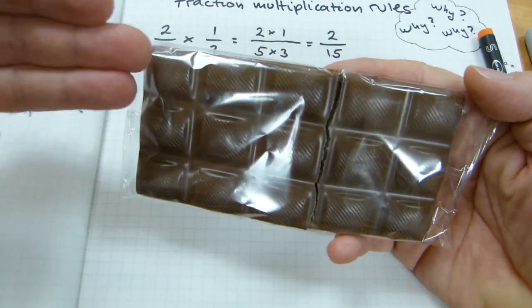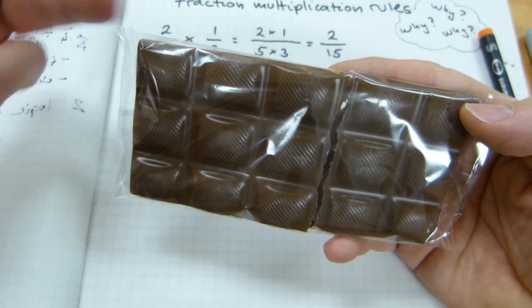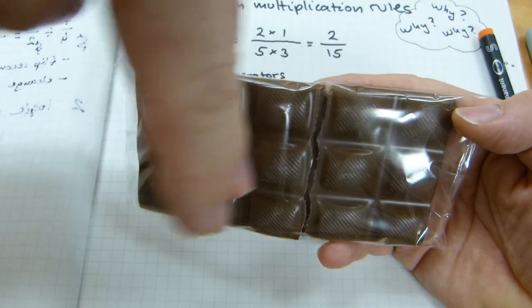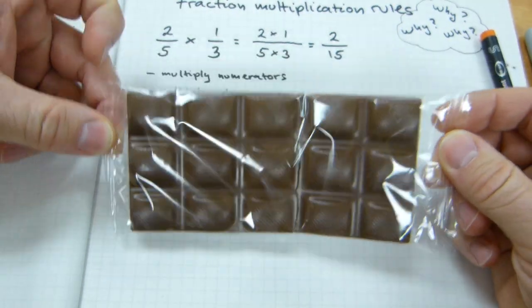So 5 squares run this way, and it's got a top row, a middle row, and a bottom row, so you have 3 groups of 5, or 5 groups of 3, if you want to look at the chocolate bar that way.